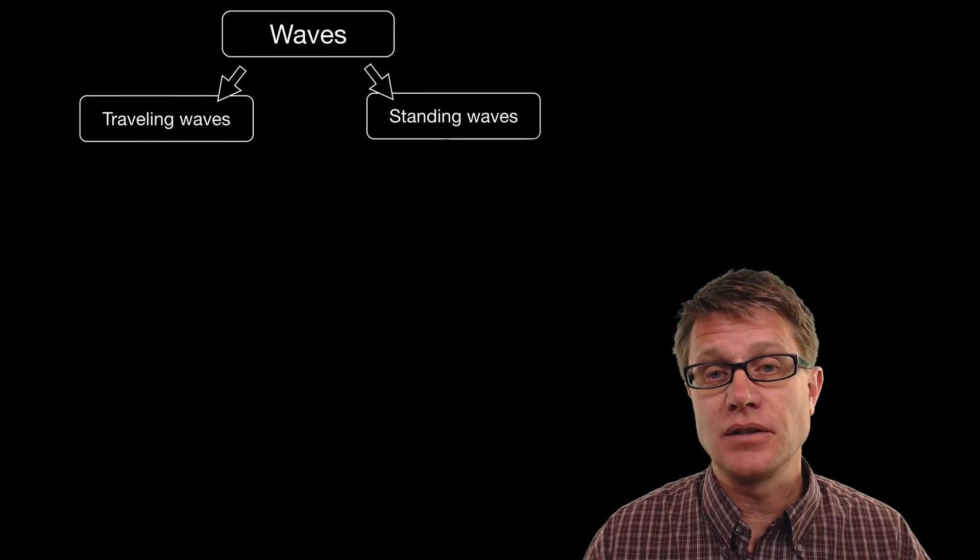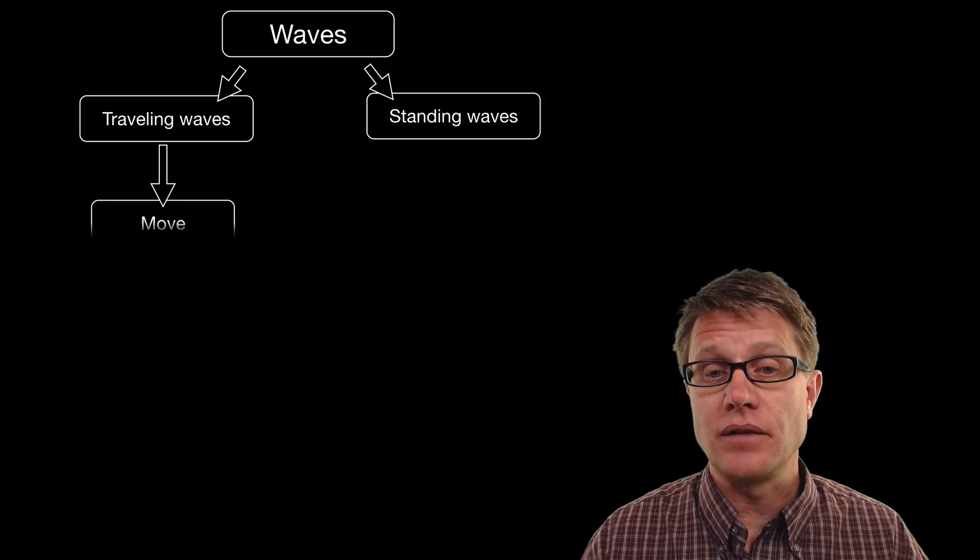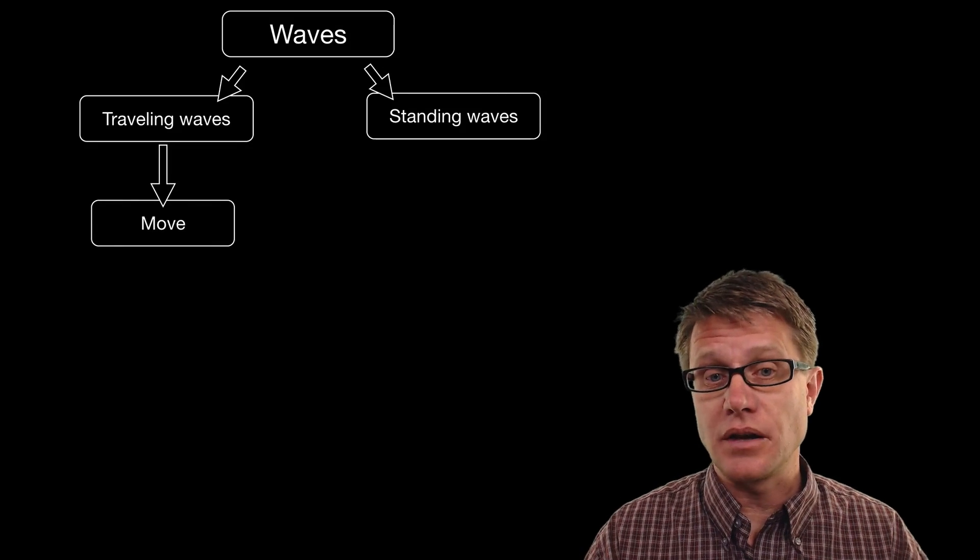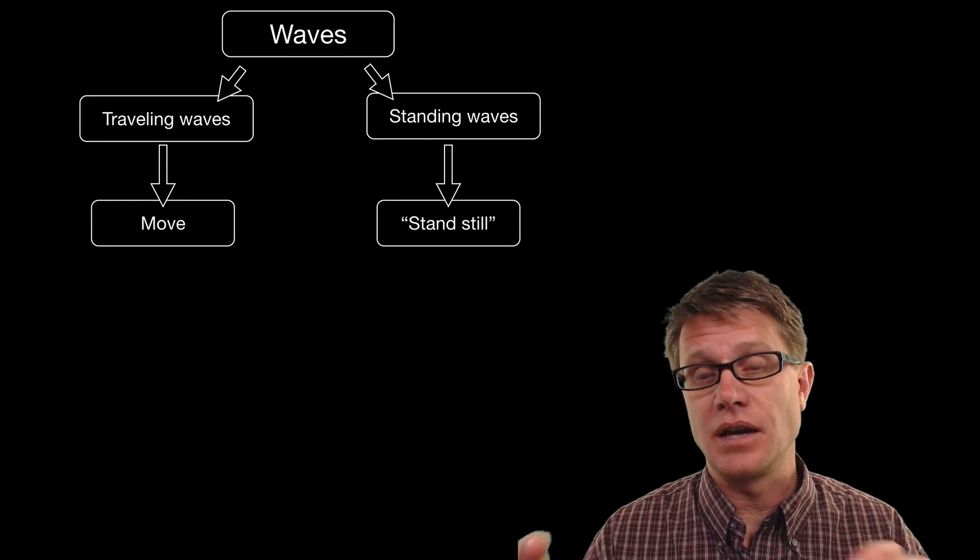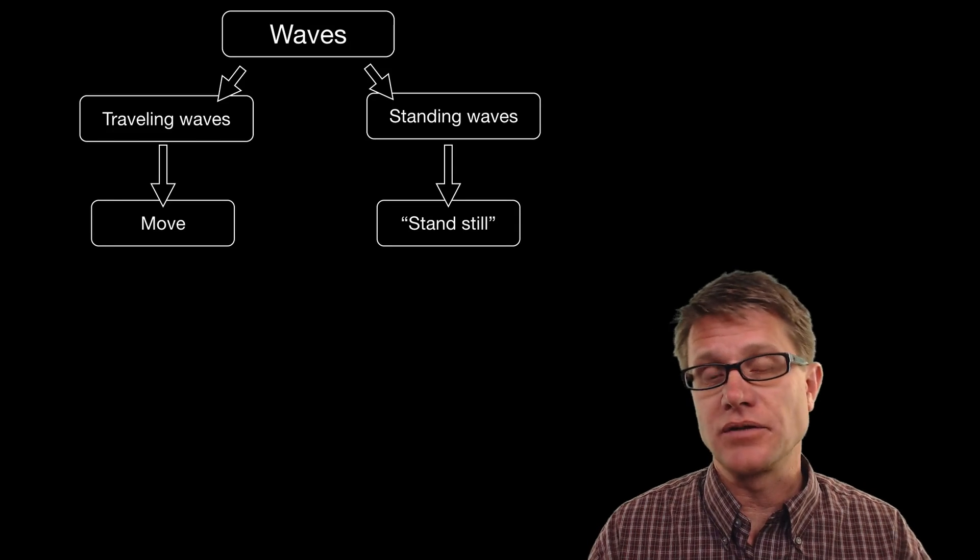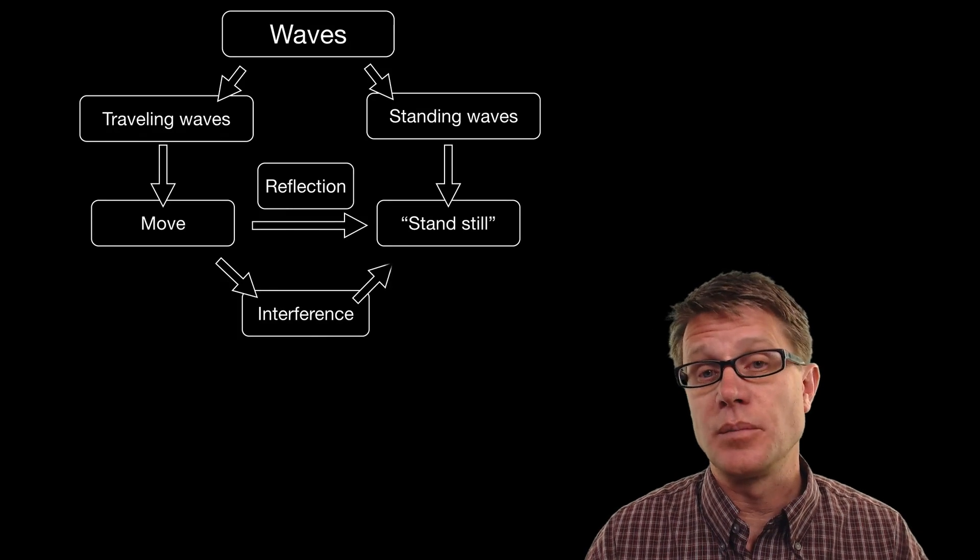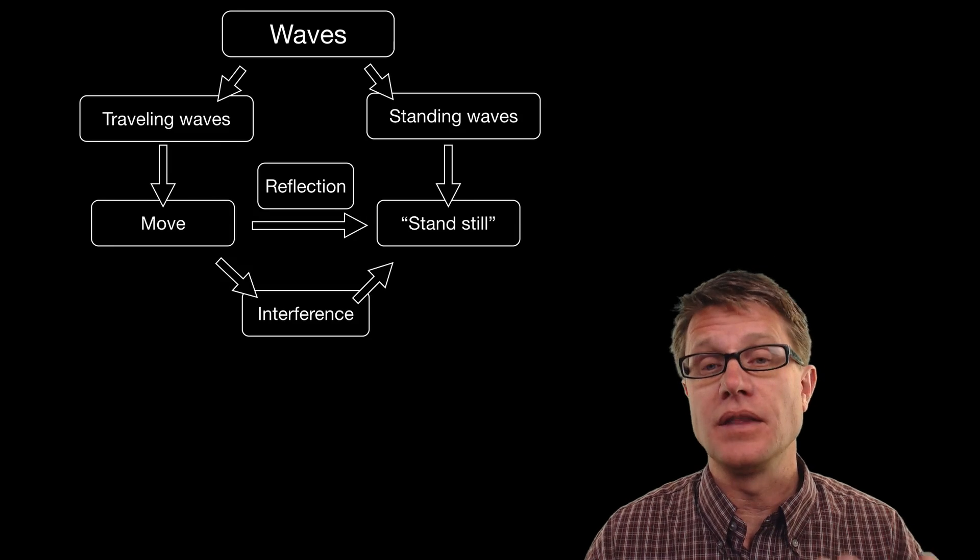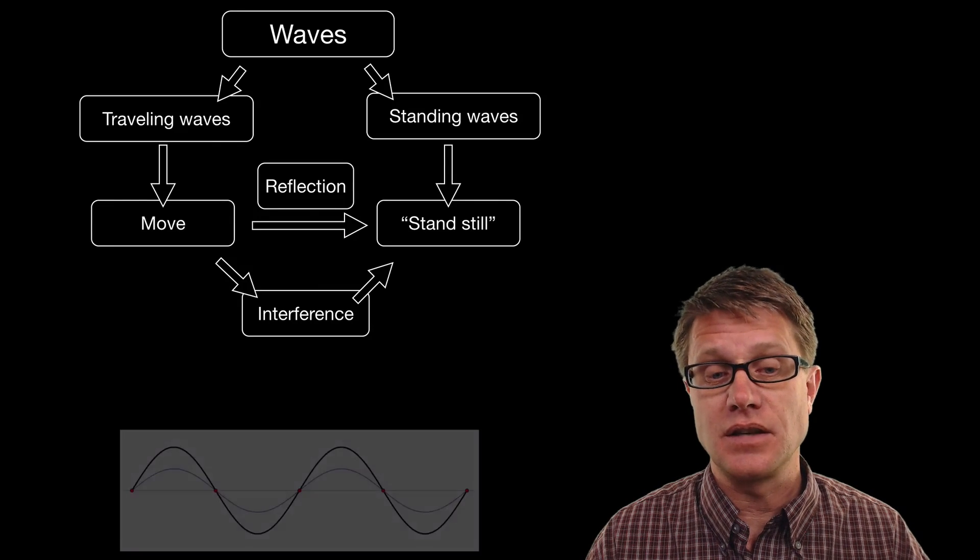And so waves can either be traveling or standing waves. Traveling waves will move from one place to another and standing waves will appear to stand still. Now when you look at it it is kind of an illusion. They are standing still but the traveling waves are bouncing back and forth. In other words they are being reflected off the boundaries and then there is interference to create these standing waves.